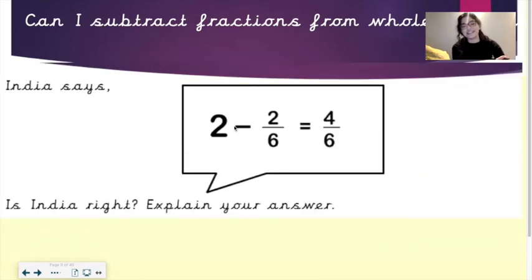India says 2 take away 2 sixths equals 4 sixths. Is India right? Explain your answer. Now the way in which I work this out is as follows. 2 as a whole number, if I want to write it as a fraction, I'm going to write it as 2 over 1. Because this sign that creates a fraction is also known as division. And 2 divided by 1 will give us 2, which is our whole number here. So as a fraction, it's going to be written as 2 over 1.